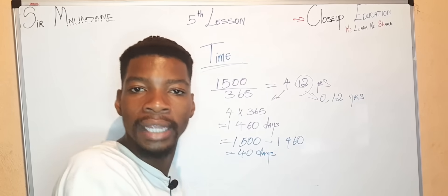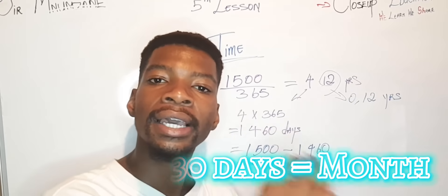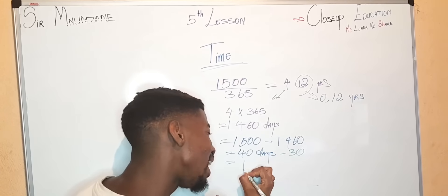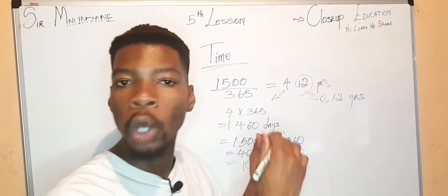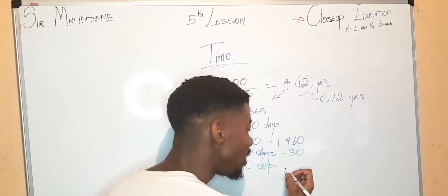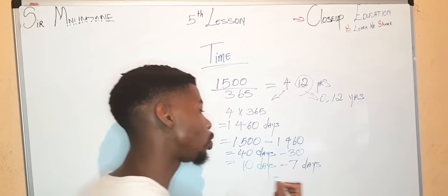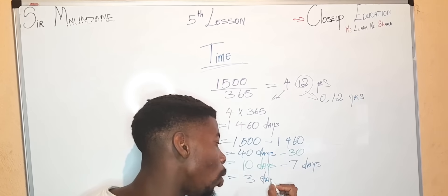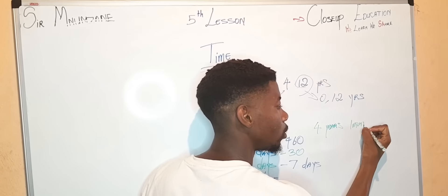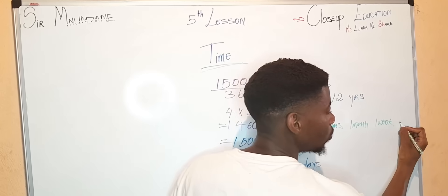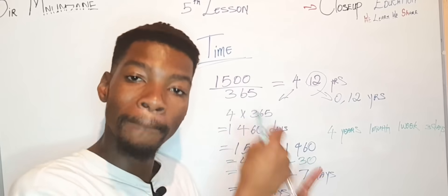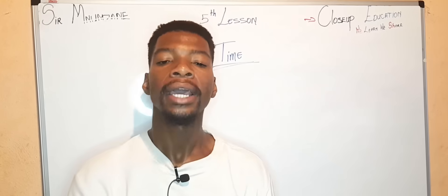We now know that 0.12 years equals 40 days. To find the months: a month has 30 days, so 40 minus 30 equals 10 days remaining. A week has 7 days, so 10 minus 7 equals 3 days. Our final answer is 4 years, 1 month, 1 week, and 3 days. That is how we converted 1500 days into years, months, weeks, and days.